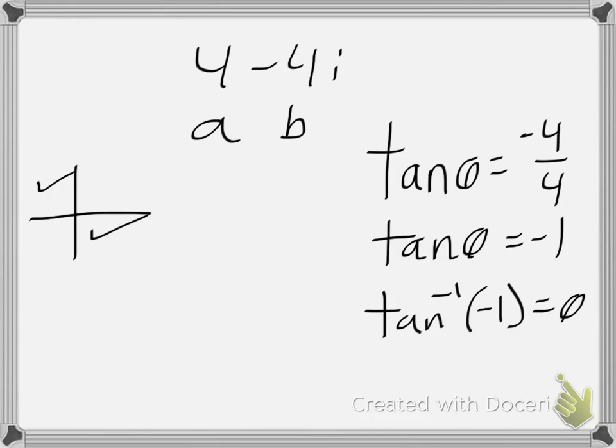Recall from earlier lessons that inverse tangent is defined upon the interval from negative pi over 2 to pi over 2. Since that's what we would be using, we can say, first of all, that means, based on that, we are restricted to between negative pi over 2 and pi over 2.